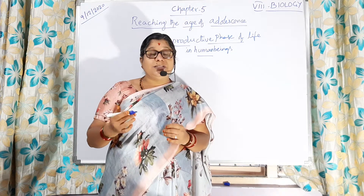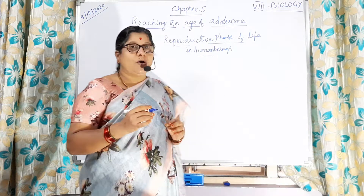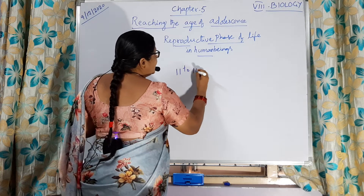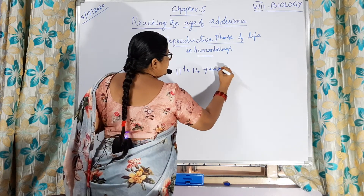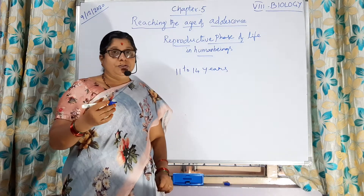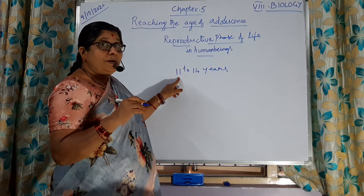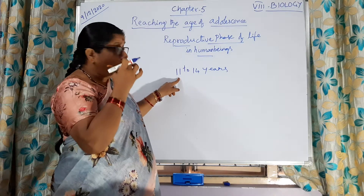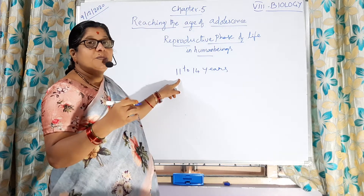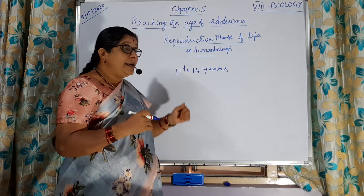In females, the reproductive phase is usually started between the age of 11 to 14 years. In between 11 to 14 years, the girls are going to mature — meaning the functioning of ovaries will start. However, you might have observed that before the age of 11, in some girls, the maturity period is seen. They are maturing much earlier than the stipulated age.